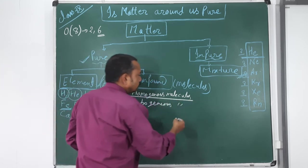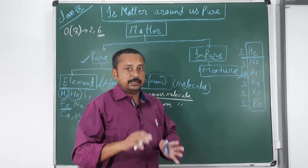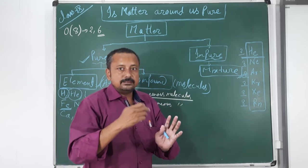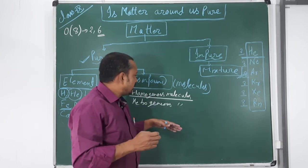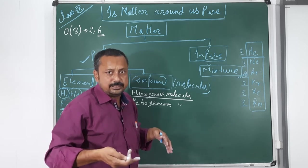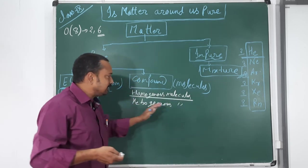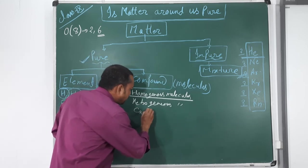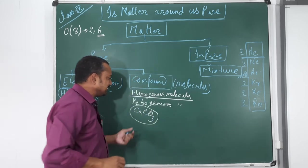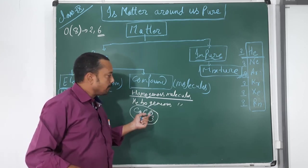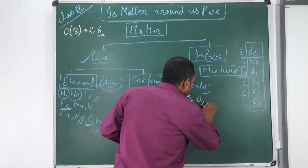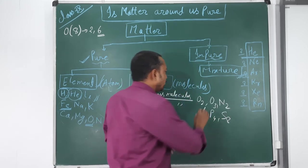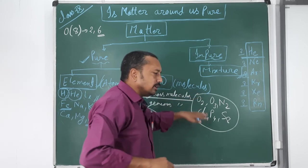Compounds are of two types: homogeneous molecules and heterogeneous molecules. Homogeneous molecules are those which consist of only the same type of atom. Heterogeneous molecules are those which consist of two or more different types of atoms. For example, CaCO3 is a heterogeneous molecule because it consists of three different types of atoms: calcium, carbon, and oxygen. But O2, O3, N2, Cl2, P4, and S8 are all homogeneous molecules — they consist of two or more atoms, but all atoms are alike.